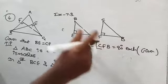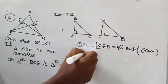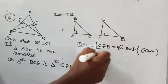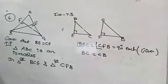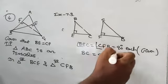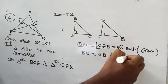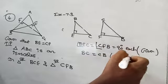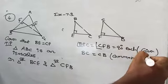BC is common — BC is the common hypotenuse of both triangles.